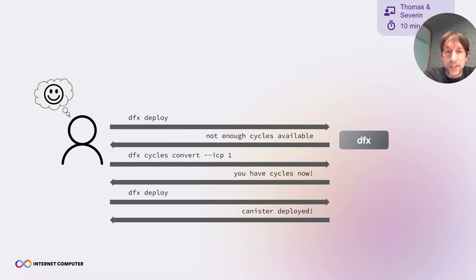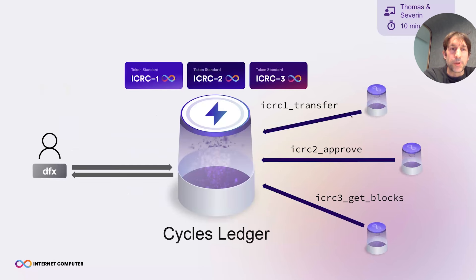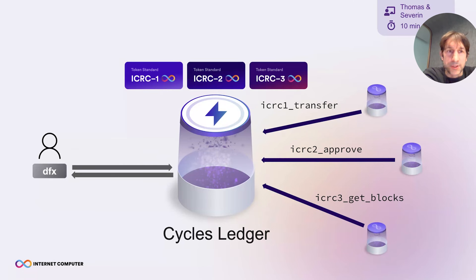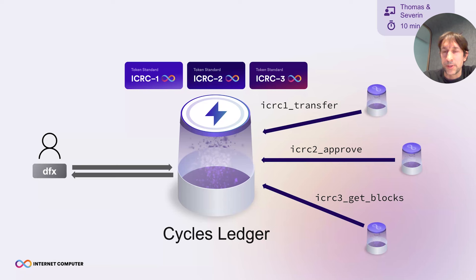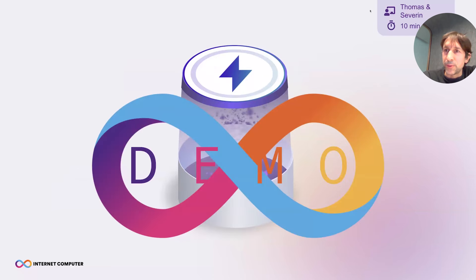Only canisters can actually hold cycles, so the natural question is how does this feature actually work? In the background, DFX talks to a new global ledger called the cycles ledger, which essentially acts as a bank of cycles for users — you can deposit your cycles there, transfer them, and withdraw cycles to top up canisters. The great thing about the cycles ledger is that it is ICRC-1, ICRC-2, and ICRC-3 compatible, including the brand-new ICRC-3 token standard, meaning any canister wishing to integrate with the cycles ledger can do so using standard endpoints. Now Severin will show a live demo.